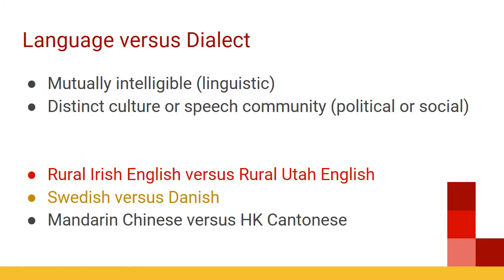This brings up the question: what is a language versus a dialect? Linguistically, if two languages are mutually intelligible — meaning speakers can generally understand each other — then we would say those are not distinct languages, just different dialects of the same language. But there's also a more political or social definition: if something is spoken by people from distinct cultures or speech communities, we treat those as different languages, while if we think of them as the same culture, we treat what they speak as dialects of the same language.